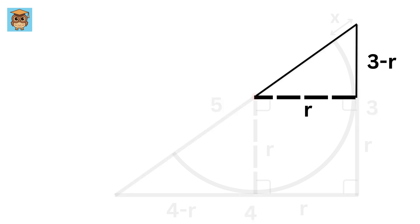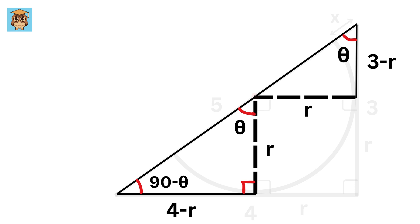So now consider this triangle and this triangle. If this angle is theta, then this angle will be 90 minus theta, and since this is 90 degree, and this is 90 minus theta, so this angle will also be theta.